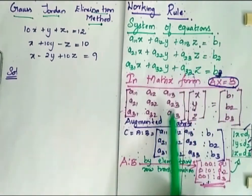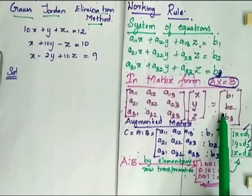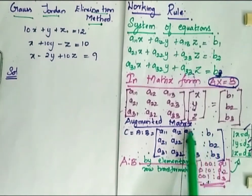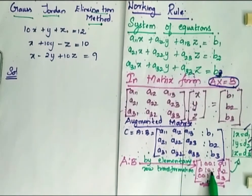First write the equation in matrix format such that AX is equal to B. So we have written here. Then come for augmented matrix that is A is to B.